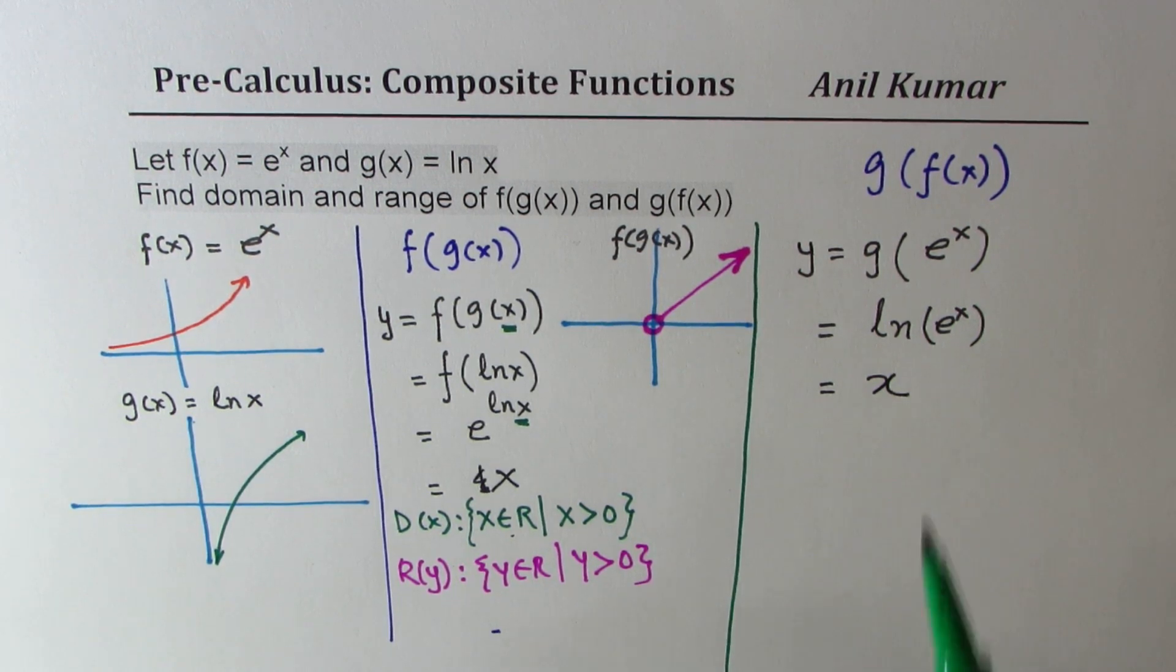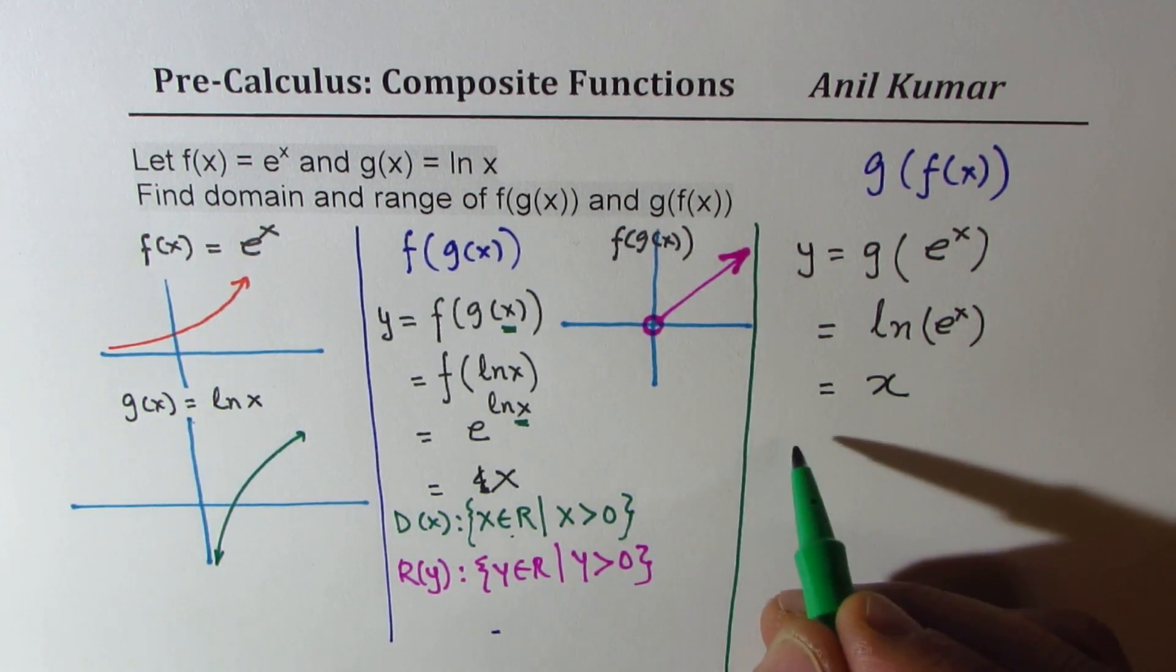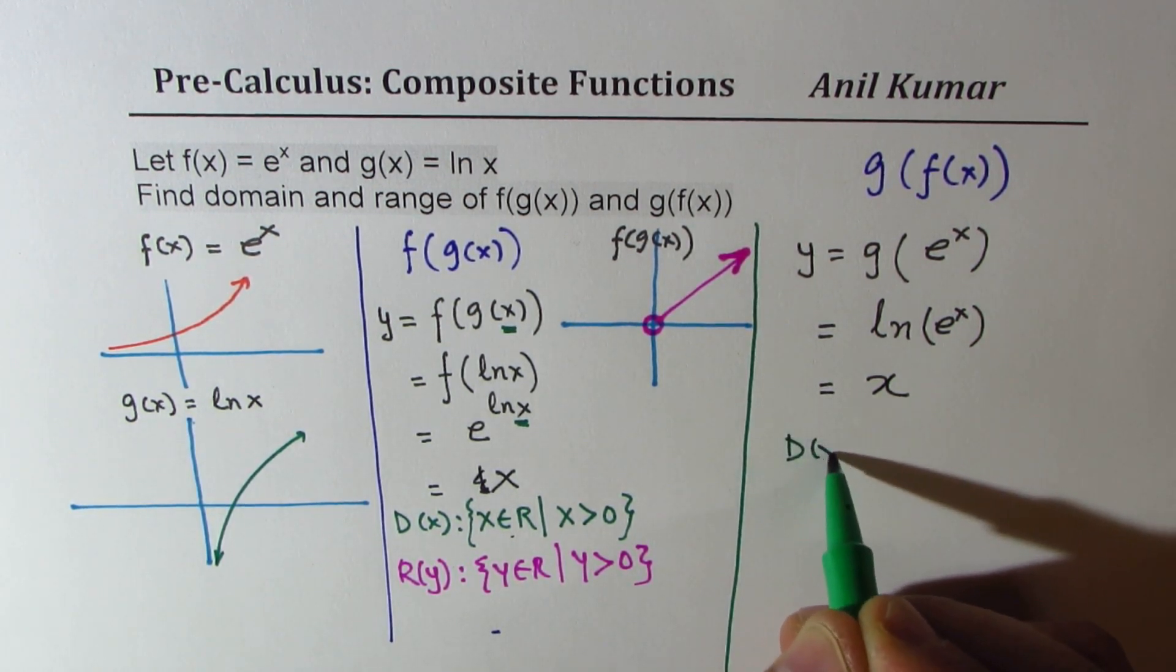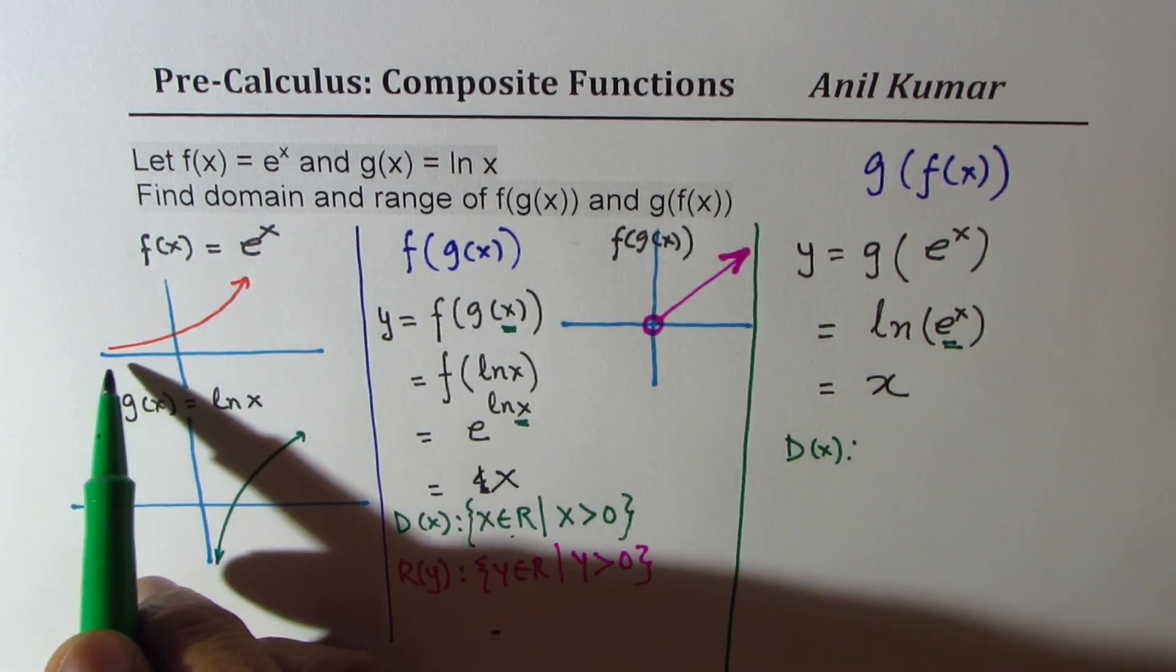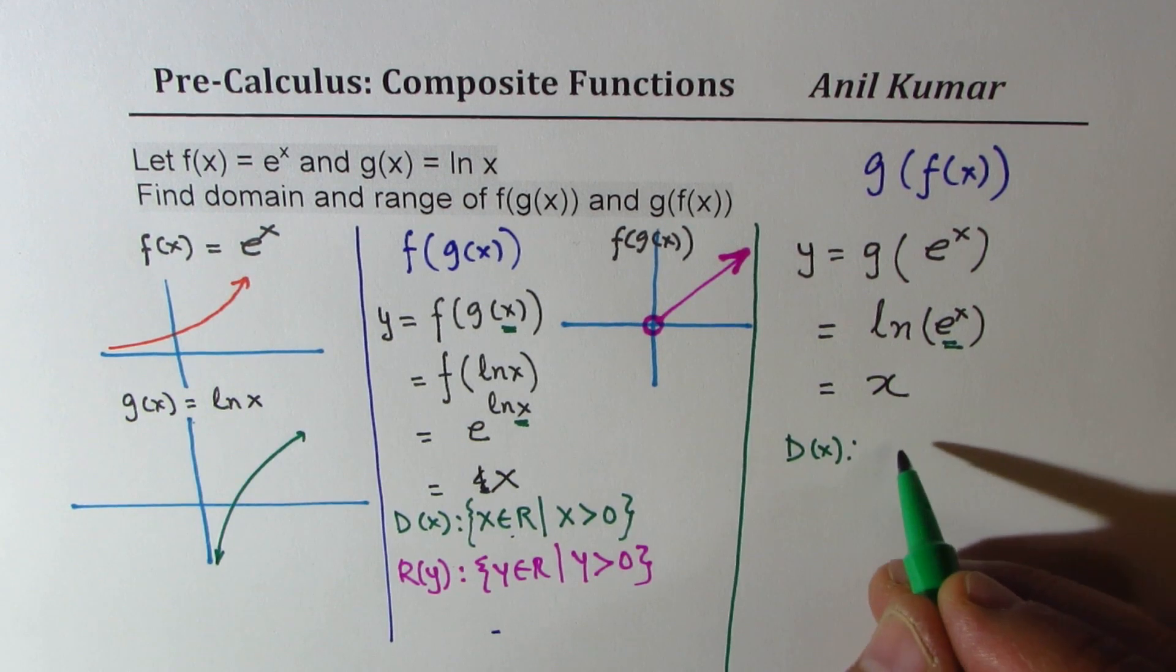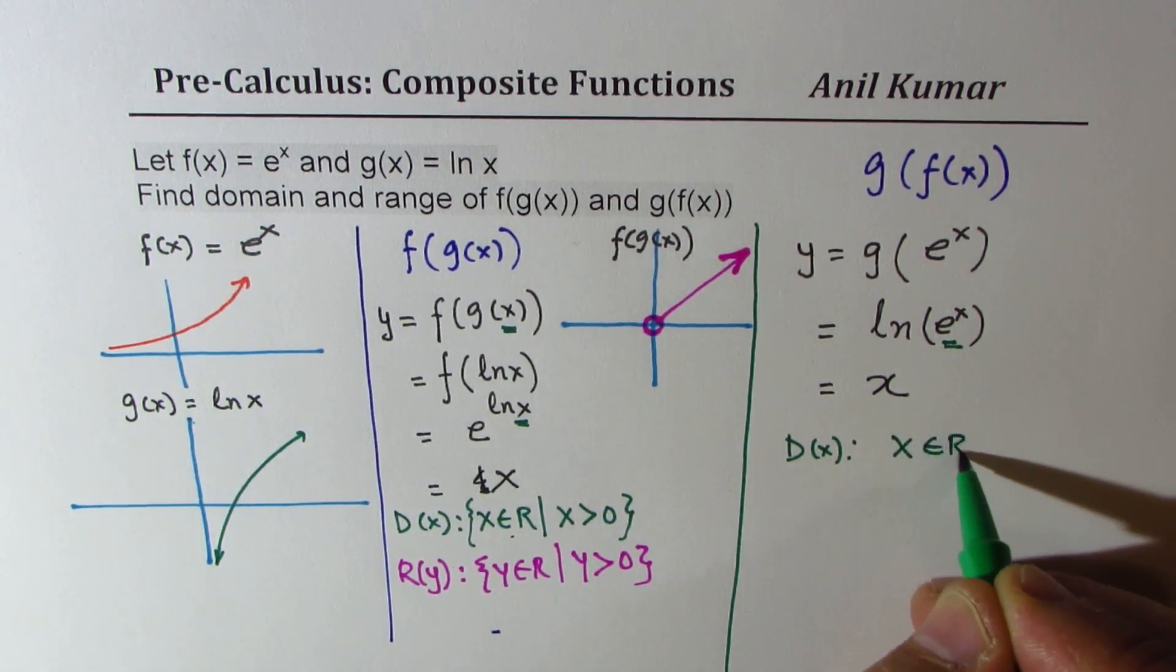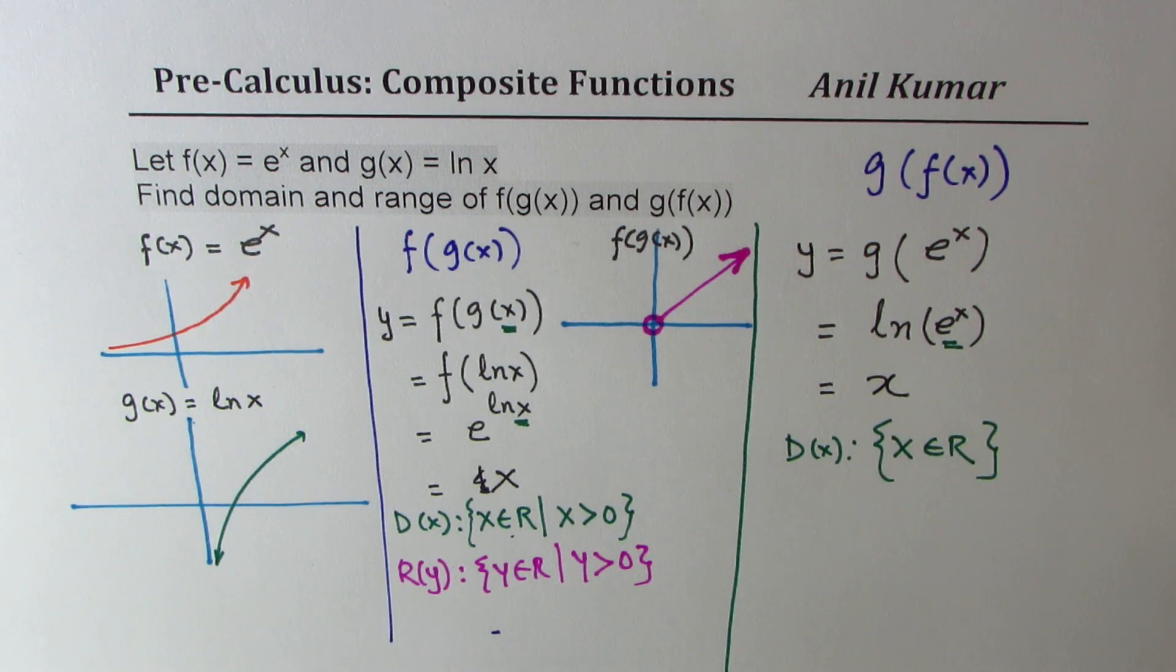Domain in this case will be what? e to the power of x, as you can see, has no restrictions, so it is x belongs to real numbers. Perfect. And as far as the range is concerned, let me write R for range.